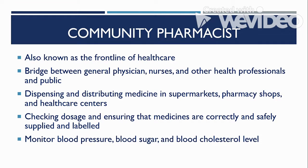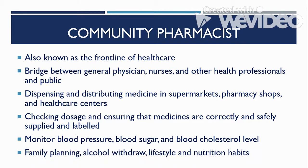Community pharmacists, such as those working in companies that conduct medical missions, also monitor blood pressure, blood sugar, and blood cholesterol levels of their patients. These are tests to determine whether the patient has hypertension, diabetes, or if their body has too much cholesterol, which can indicate heart disease or atherosclerosis. Community pharmacists can also give information to the public regarding family planning, alcohol withdrawal, as well as lifestyle and healthy diet.